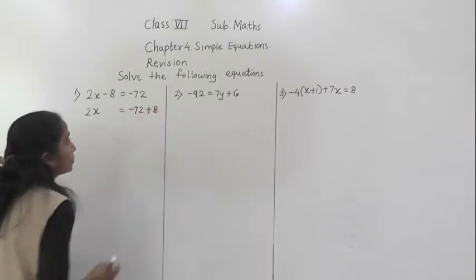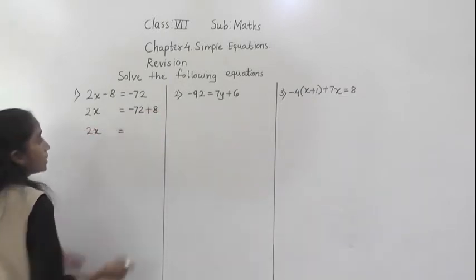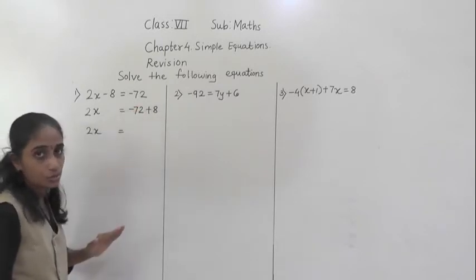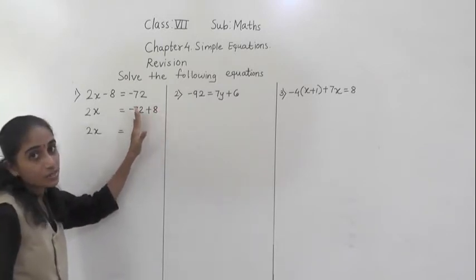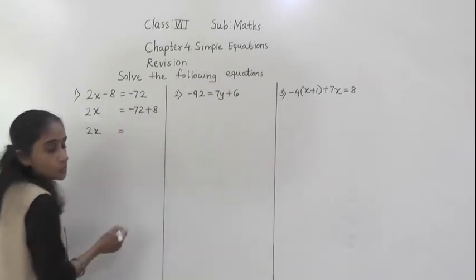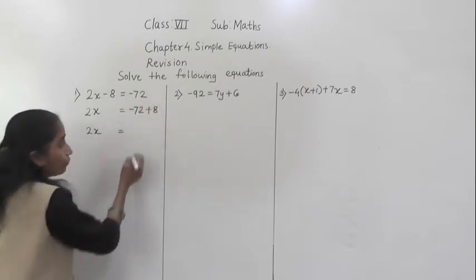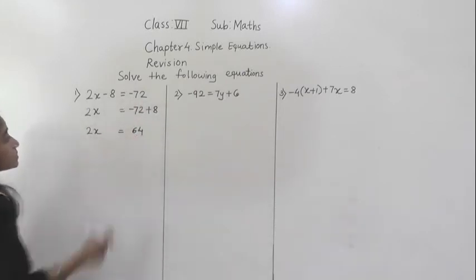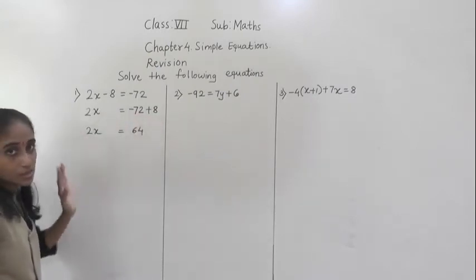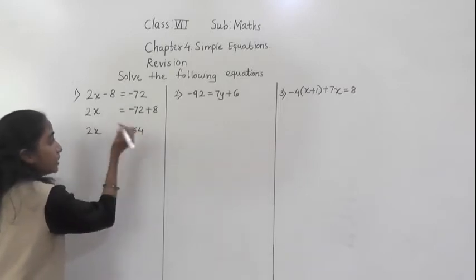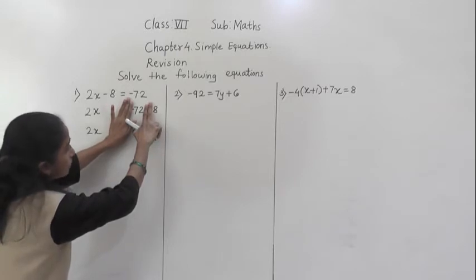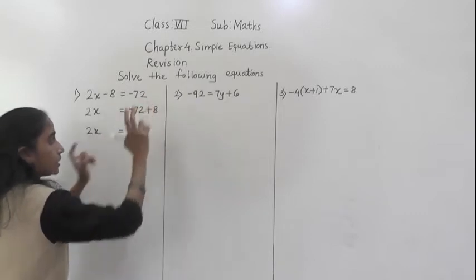Now this minus 8, if we transfer to the right hand side, it will become plus 8. So 2x is equal to minus 72 plus 8. Now minus plus: we subtract 8 from 72 — what do we get? 64. Now see which number is greater: 72 is greater, and 72 has the negative sign, so the answer will also have a negative sign. So 2x is equal to minus 64.